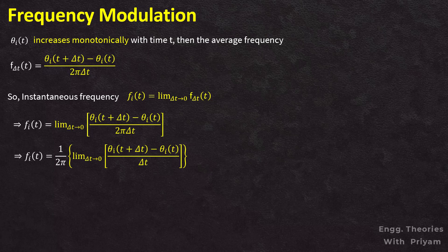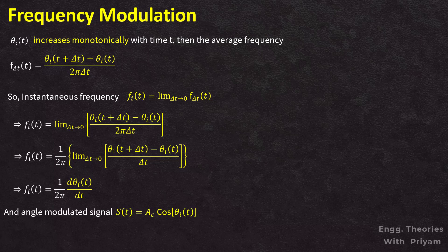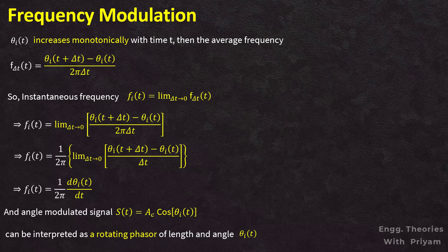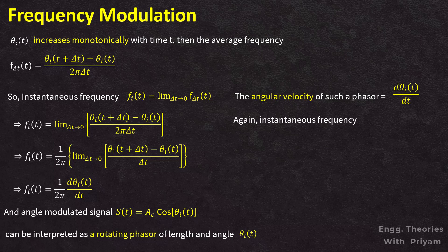According to the definition of differentiation, the limit as Δ→0 of [θi(t+Δ) − θi(t)] / Δ equals d/dt of θi(t). So the angle modulated signal s(t) = Ac·cos(θi(t)) can be interpreted as a rotating phasor of length Ac and angle θi(t), with angular velocity d/dt·θi(t) measured in radians per second.